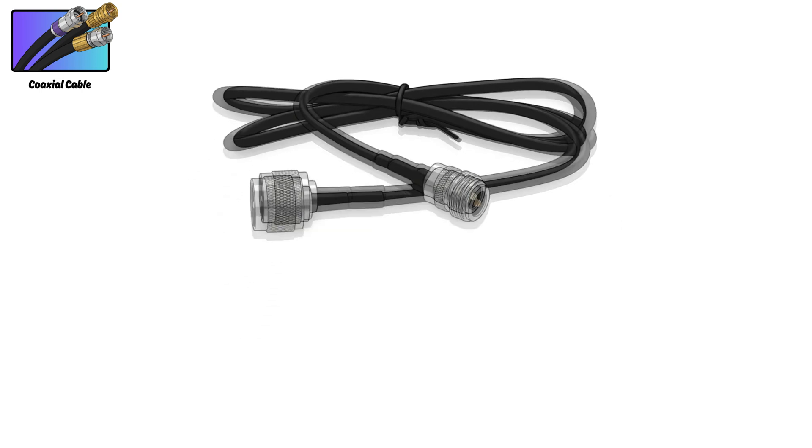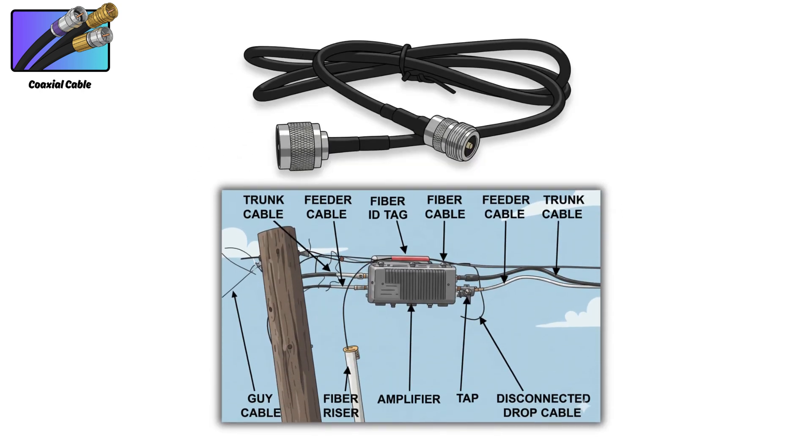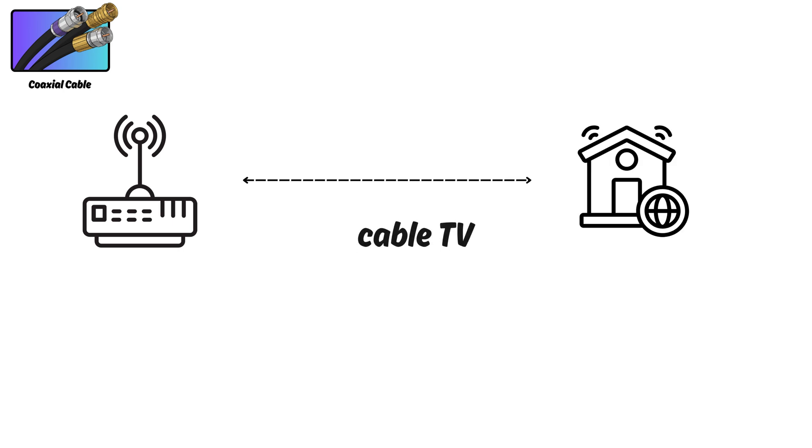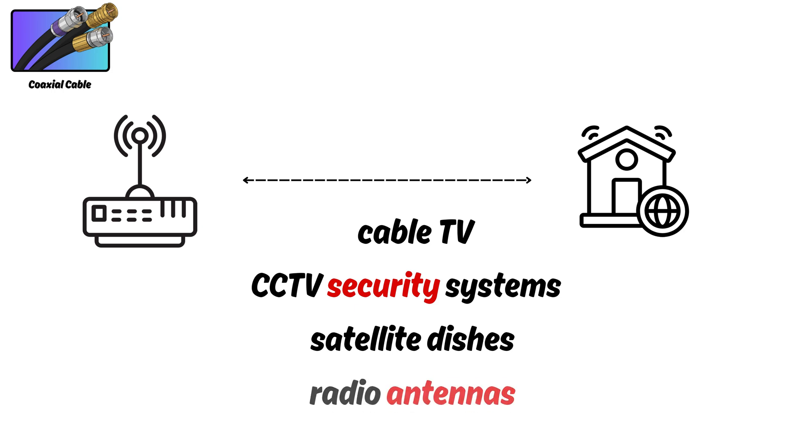In the early days, coax was used for telephone trunk lines, and today it's commonly used by internet providers to bring broadband into your home, as well as for cable TV, CCTV security systems, satellite dishes, and radio antennas.